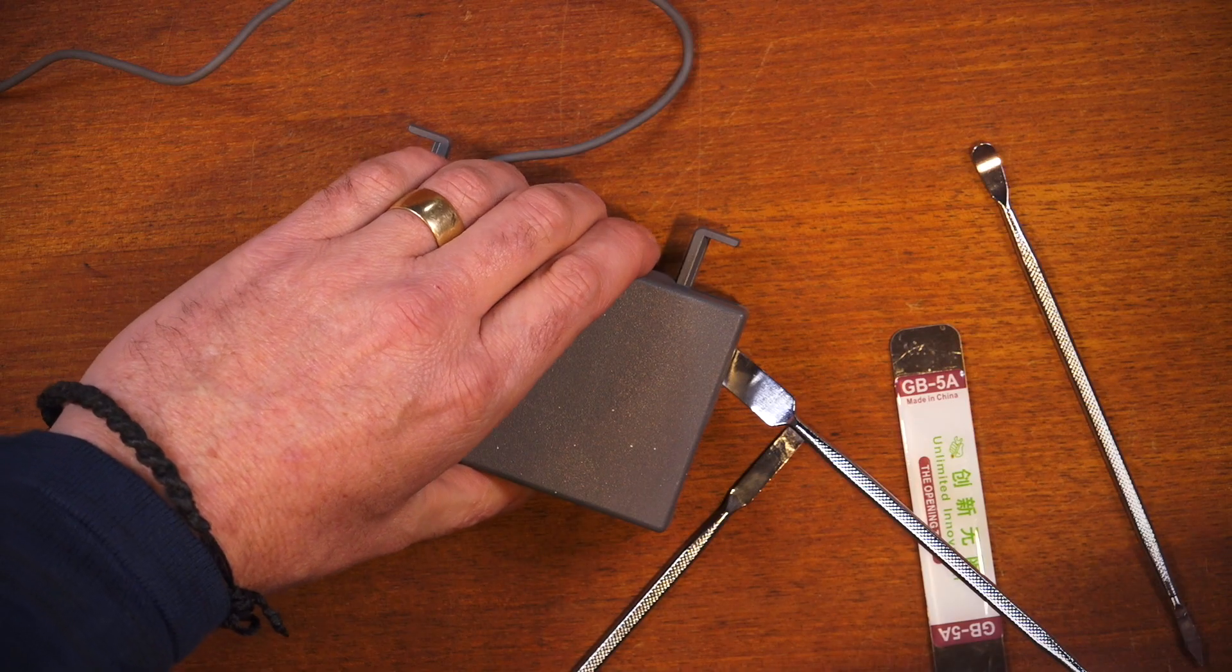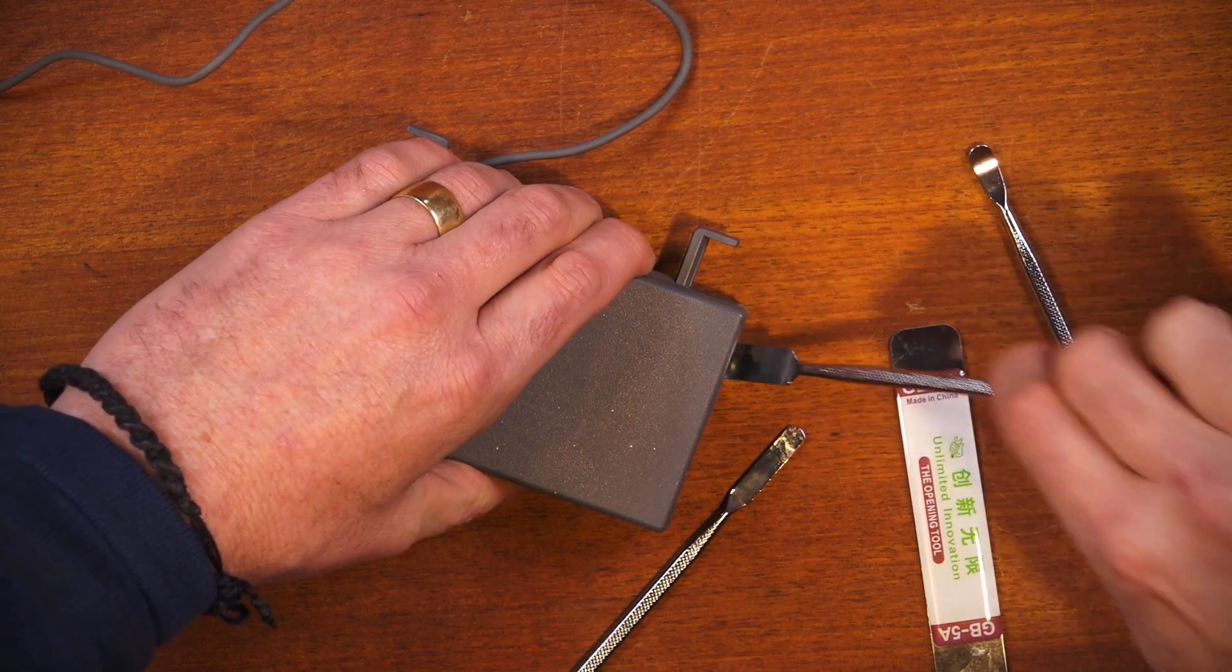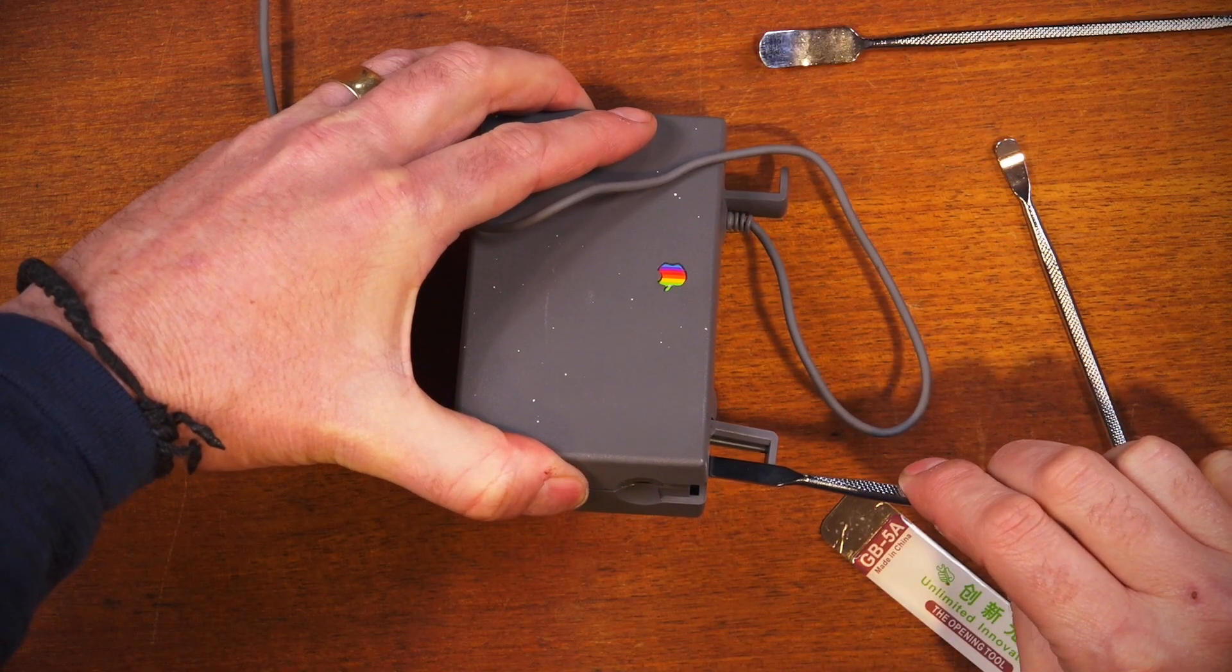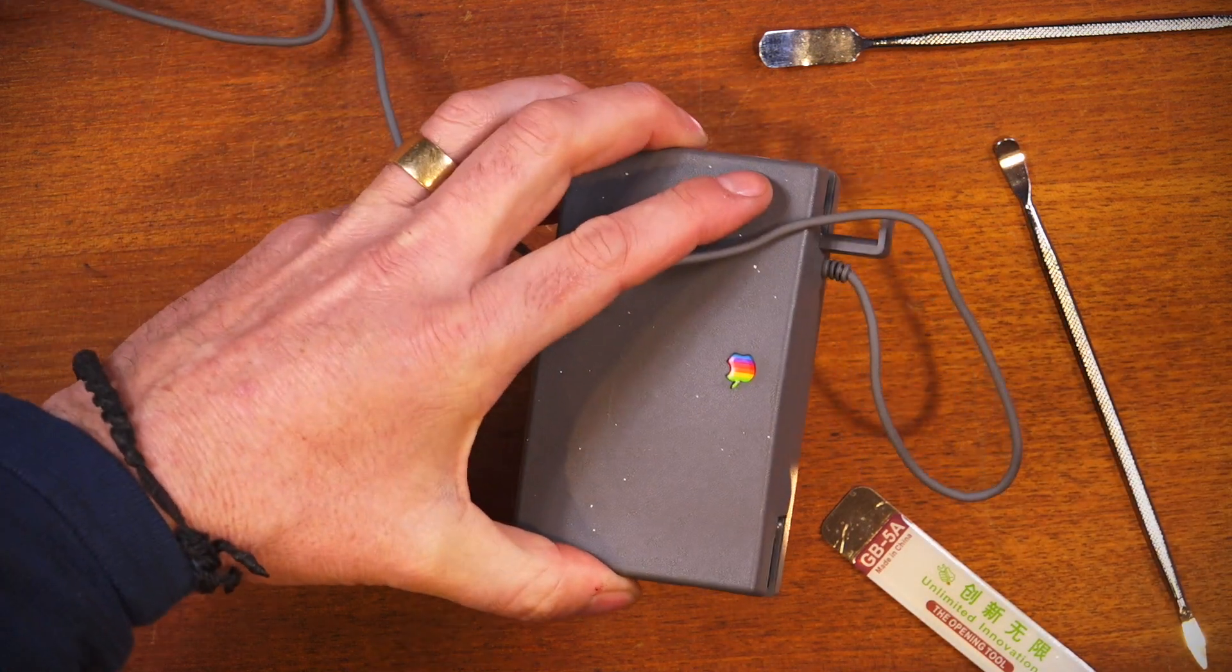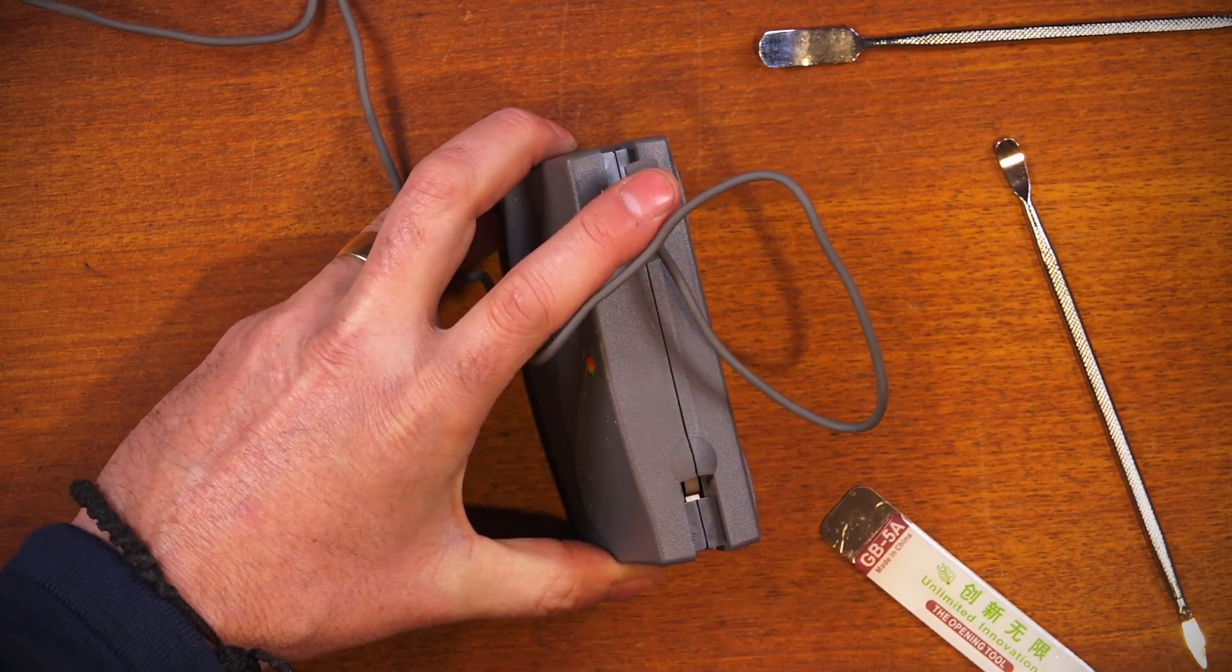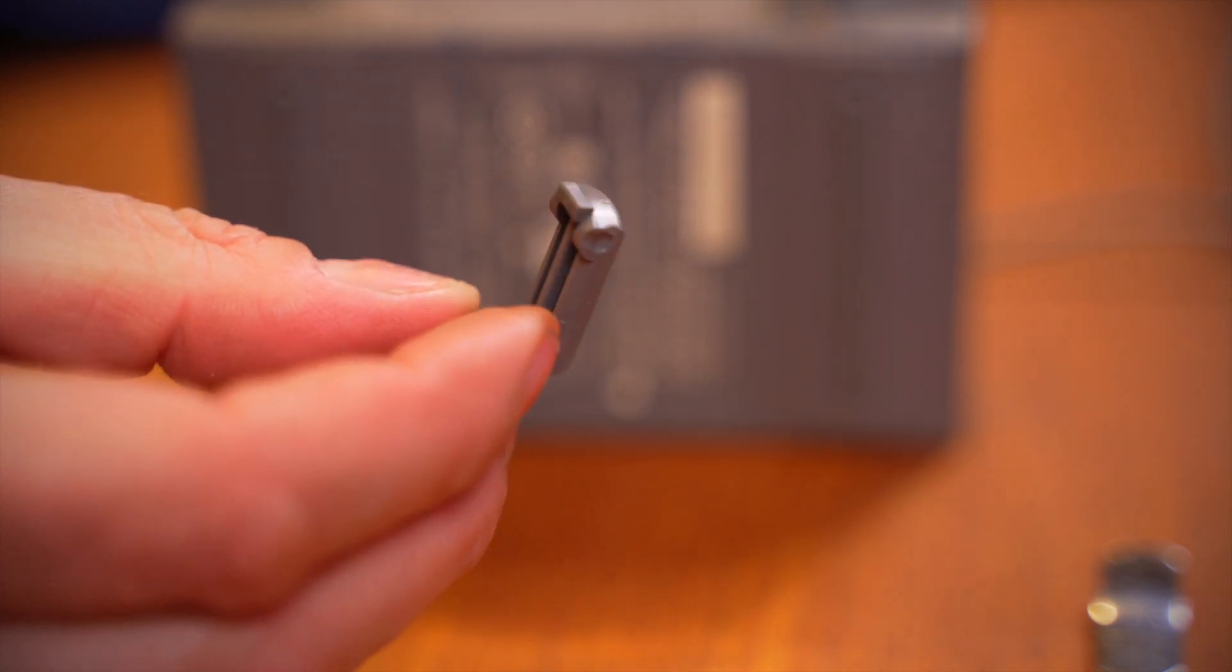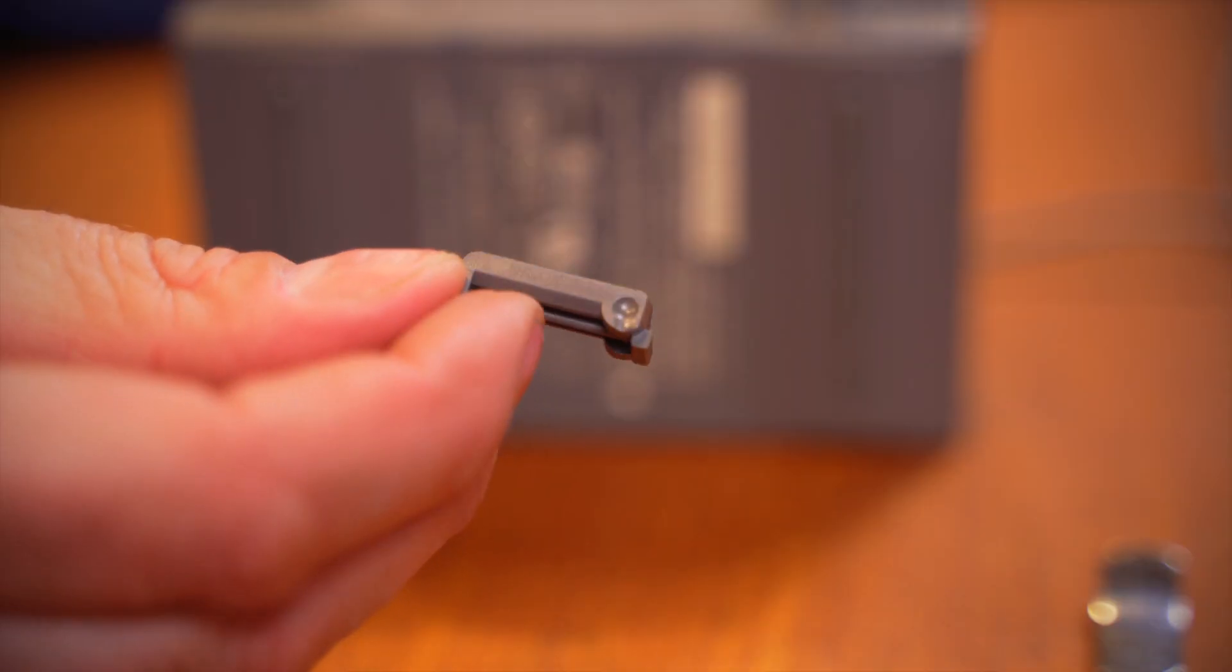Okay we seem to have got the spudger in and it's making cracky noises so we've broken the seal I suppose. Ah. Well we've lost the little tab. Let's see if we can find that. Okay good news. Found it and it doesn't appear to be snapped so we should be able to get that back in once we get the case back together.